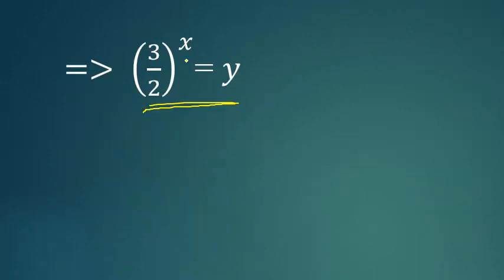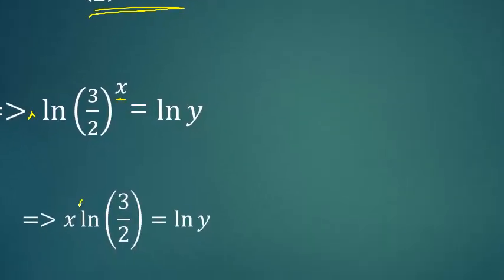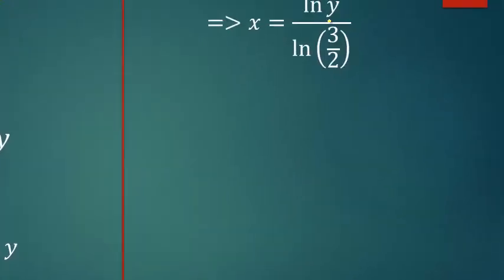The next thing to do is find x. After that we substitute y. We are going to solve this by taking the natural log of both sides. When we do that, we can bring x down. After that, we divide both sides to get x = ln(y)/ln(3/2).